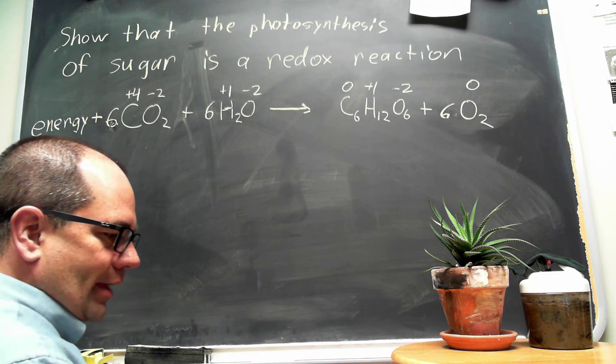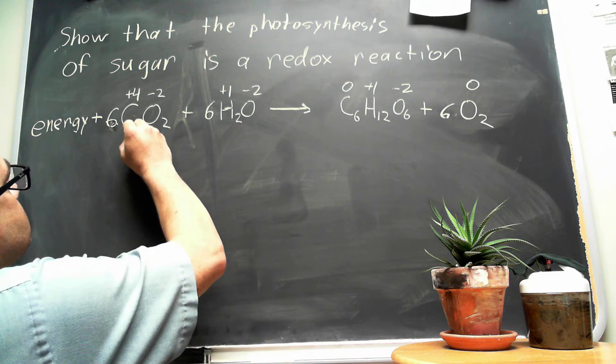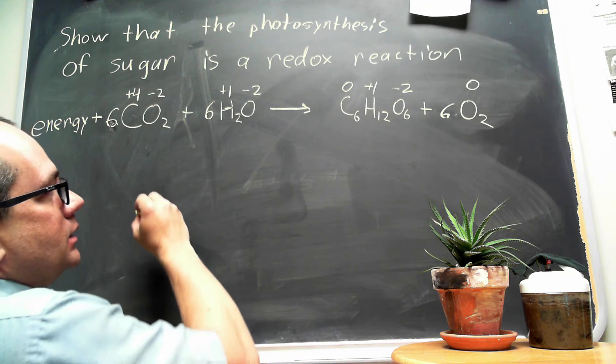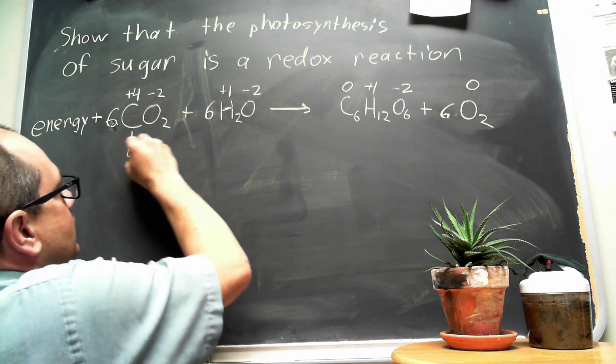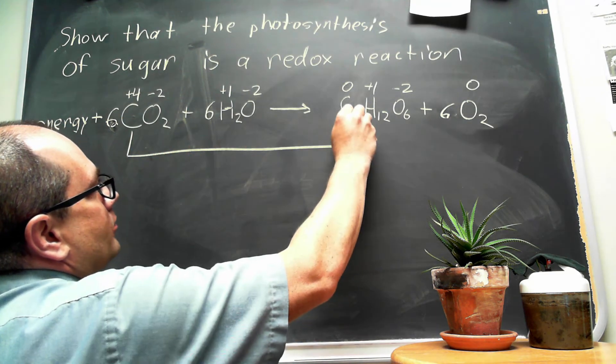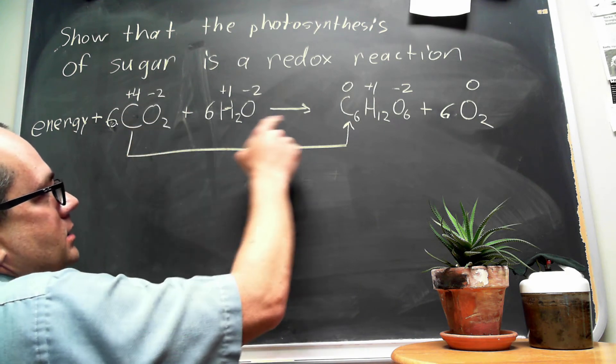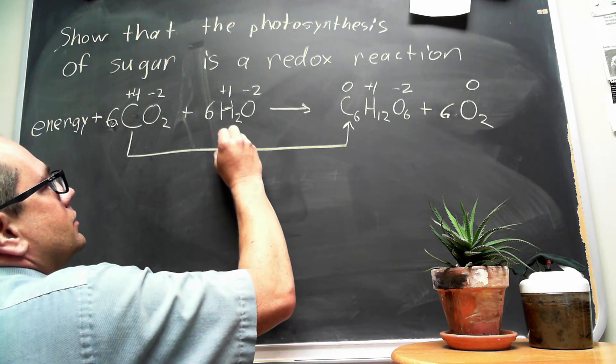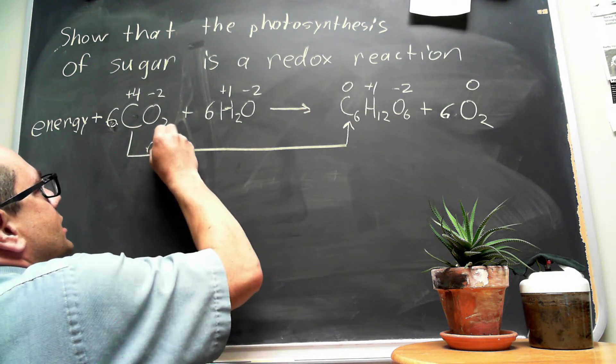And so what we have then is carbon is decreasing in oxidation number, going from carbon dioxide to sugar. And so this is a reduction.